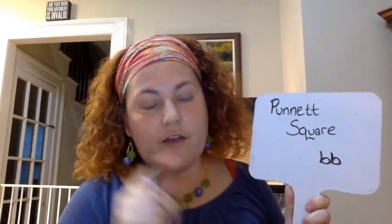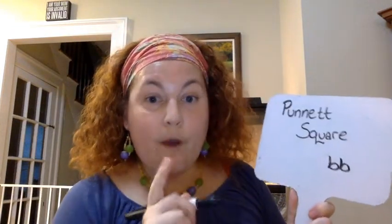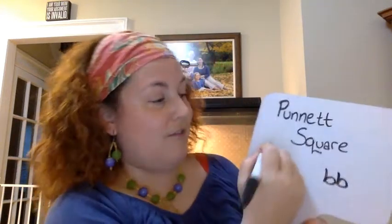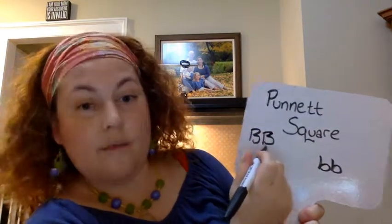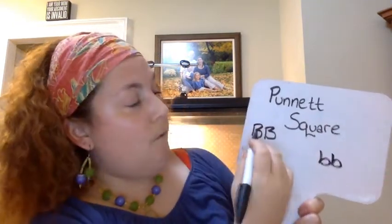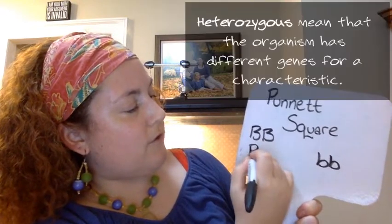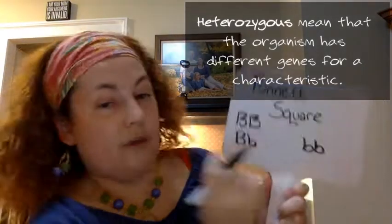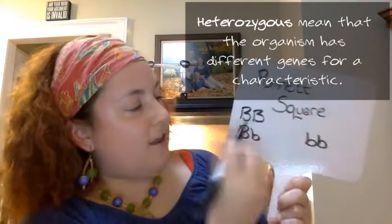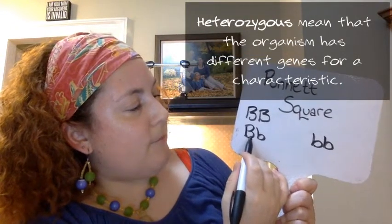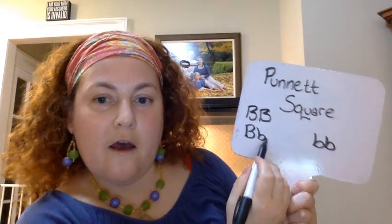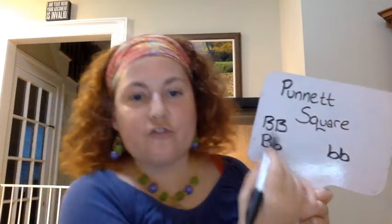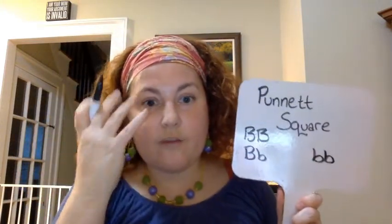My husband John, Mr. Nichols, has brown eyes, and brown eyes can come two ways. It can come either as homozygous big B, big B — both dominant — or it can be heterozygous where it's big B, little b. That means that even though he carries the big brown and the recessive blue, the brown dominates and overshadows the blue, so he has brown eyes.